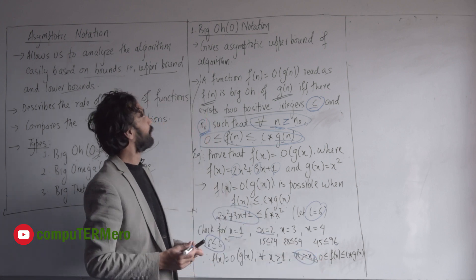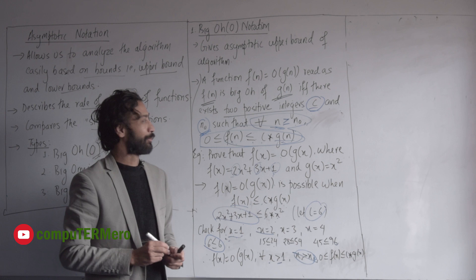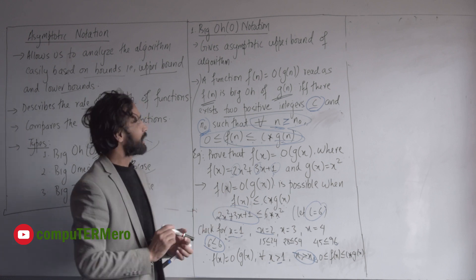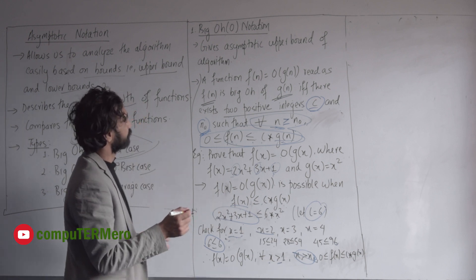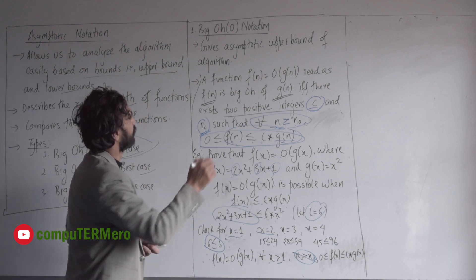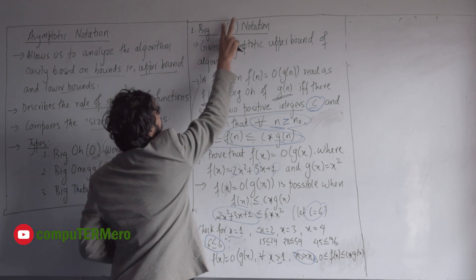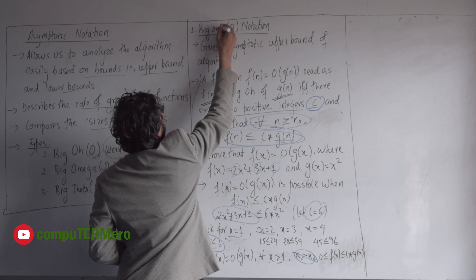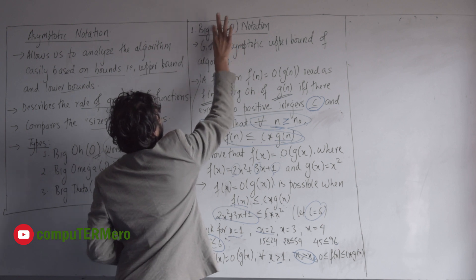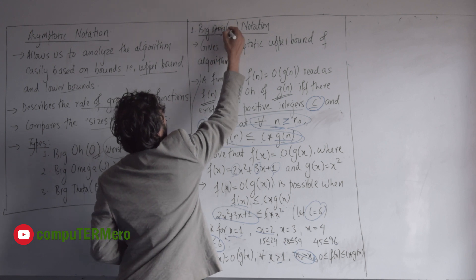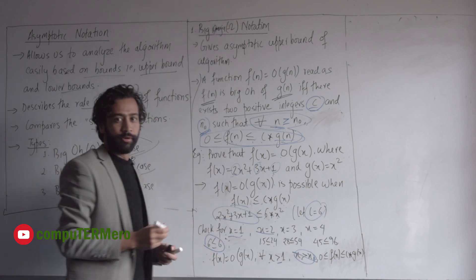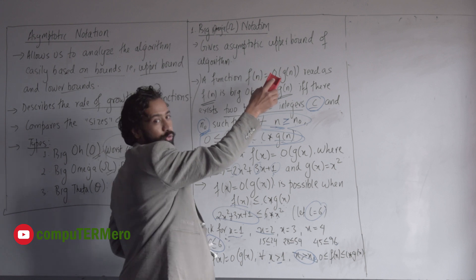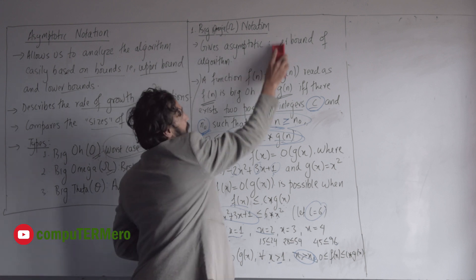We have proved Big O. Now we are doing Big Omega — this is the symbol. Big Omega's asymptotic is the lower bound.